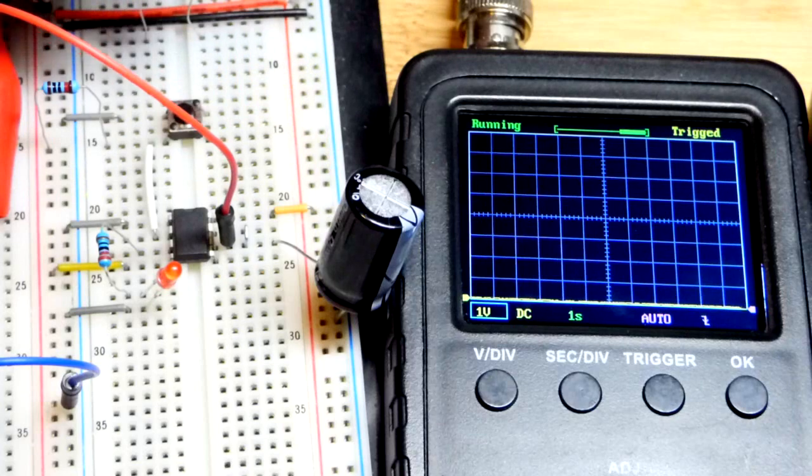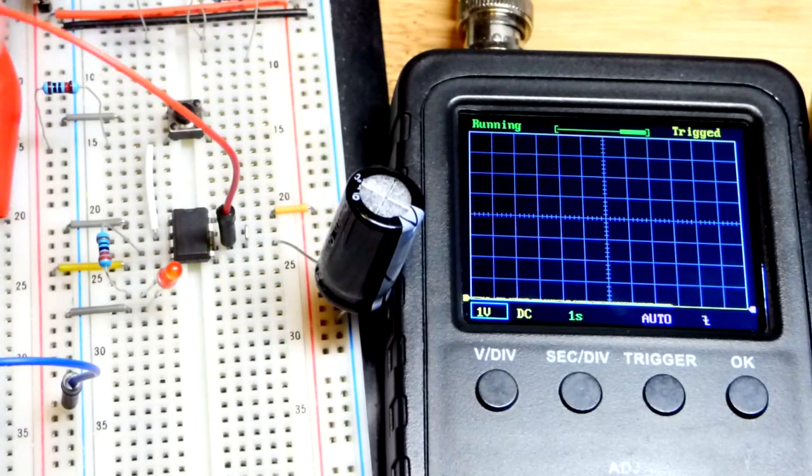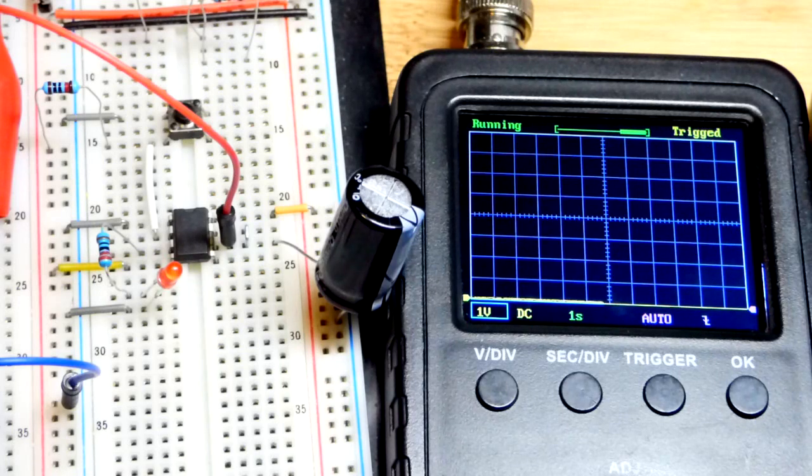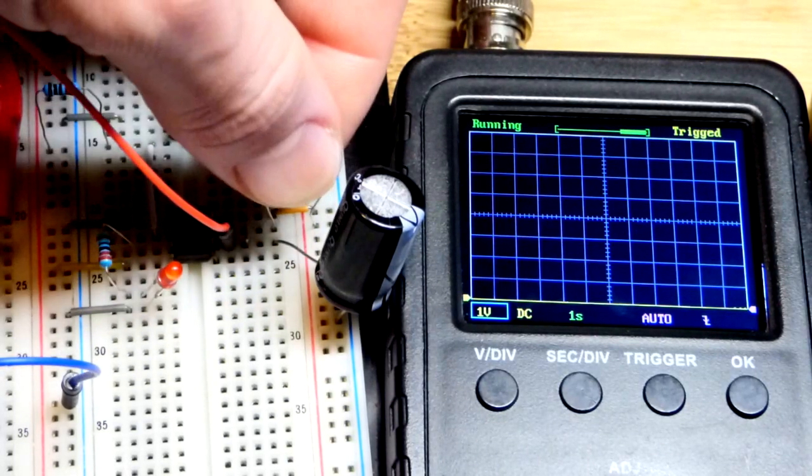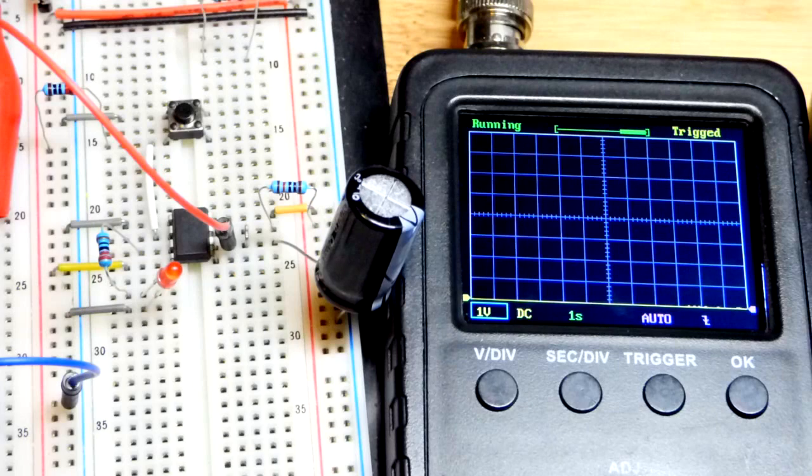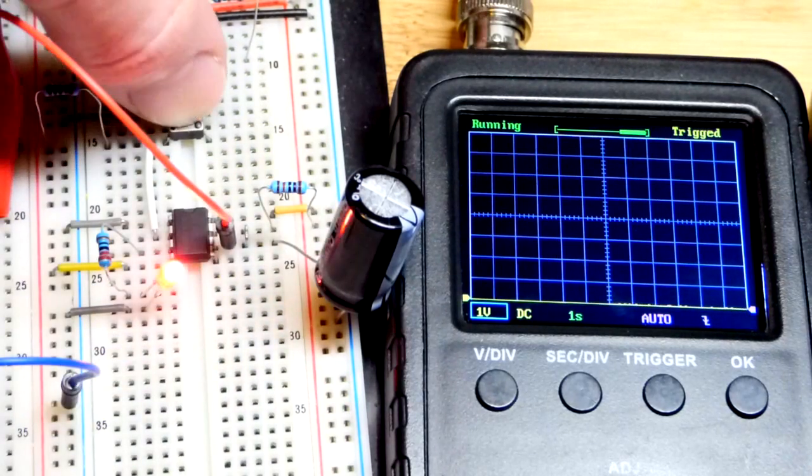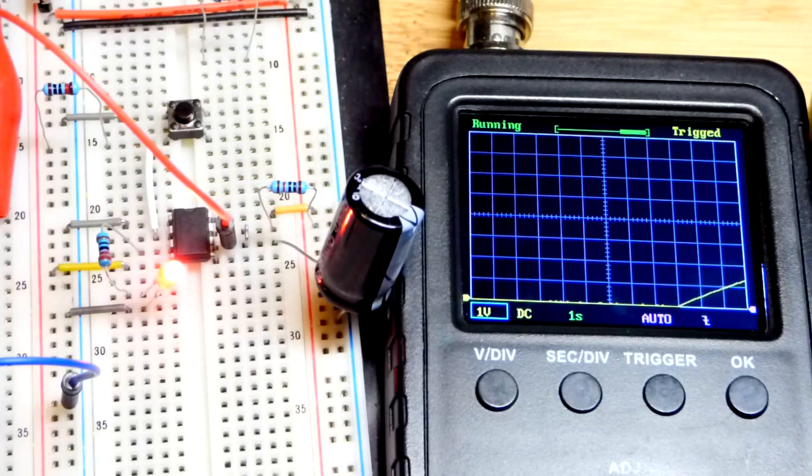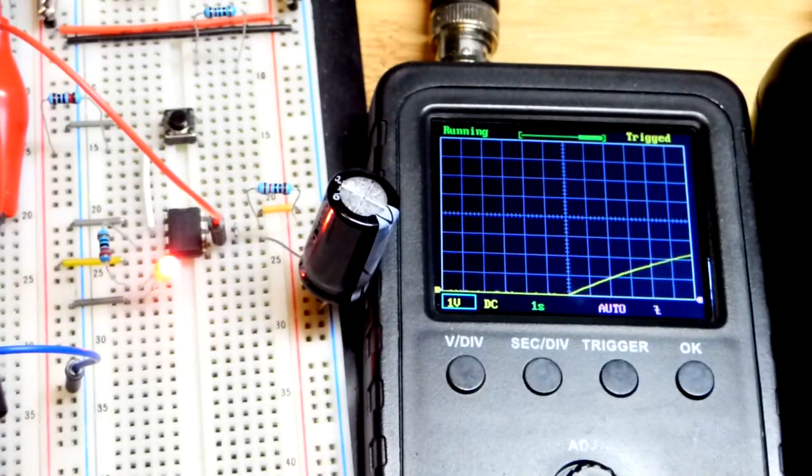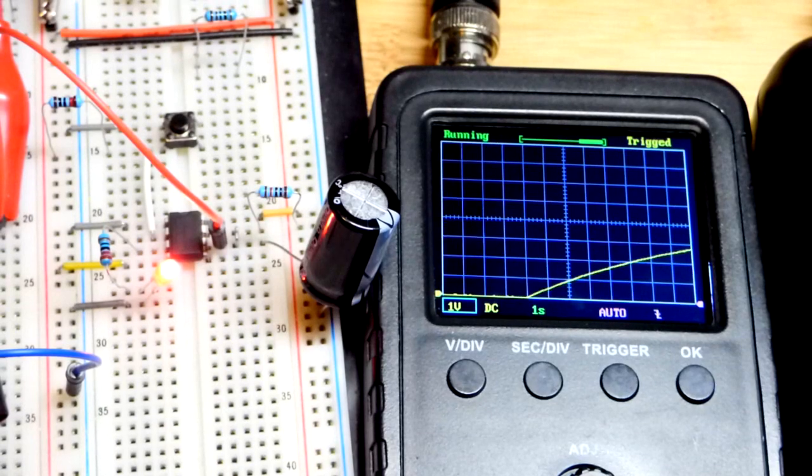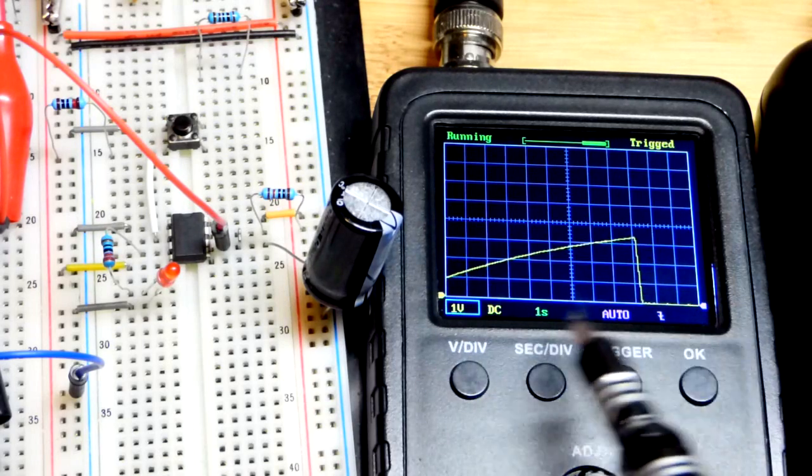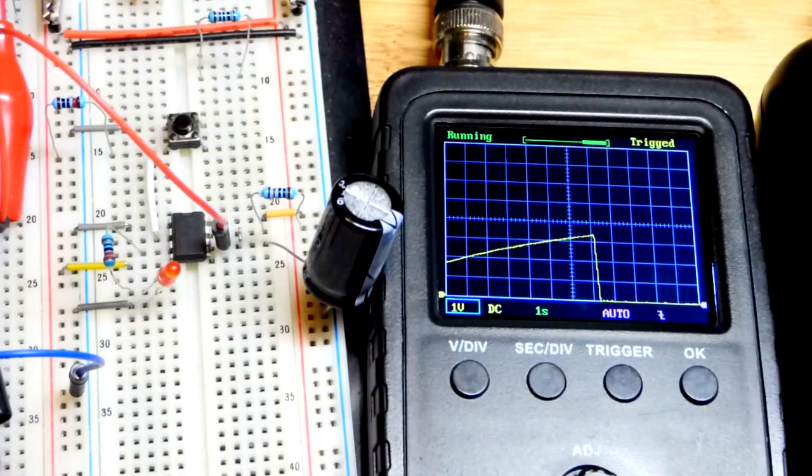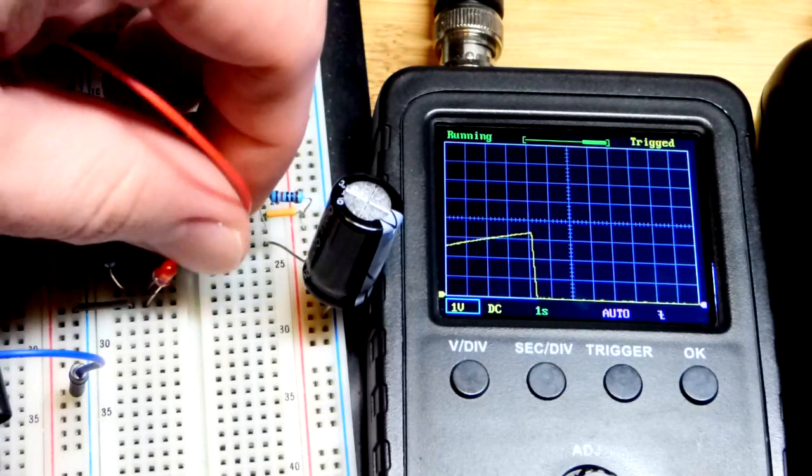Let's slow things down. We'll go to the 10 kilo-ohm resistor. Put that to the positive side of the supply. We'll stick with the capacitor again. Now we have a much slower curve. That is 10 squares across, and you can see it was about 10 seconds.